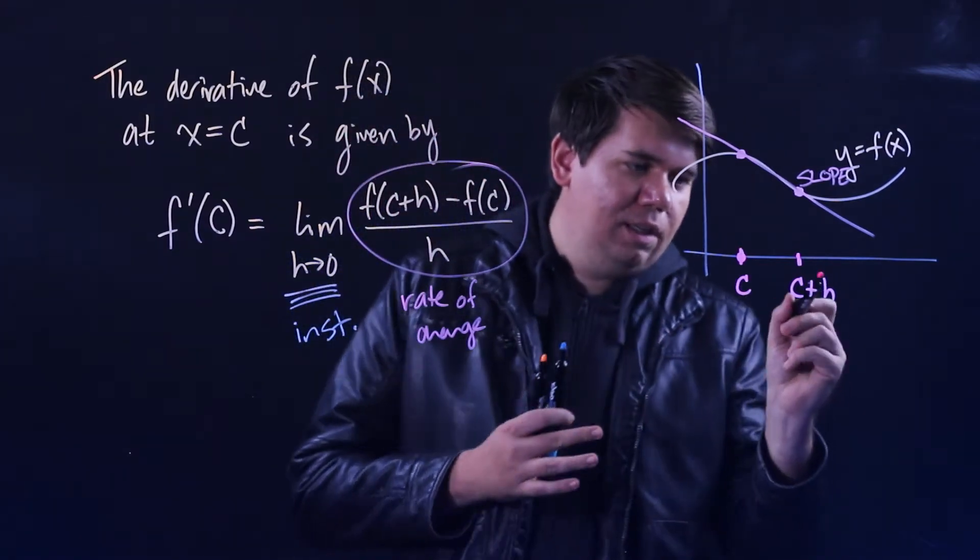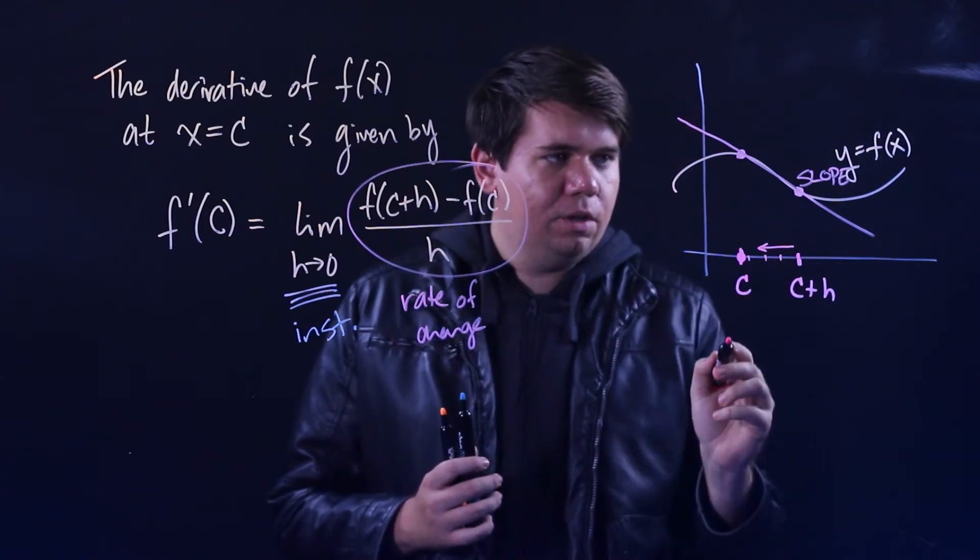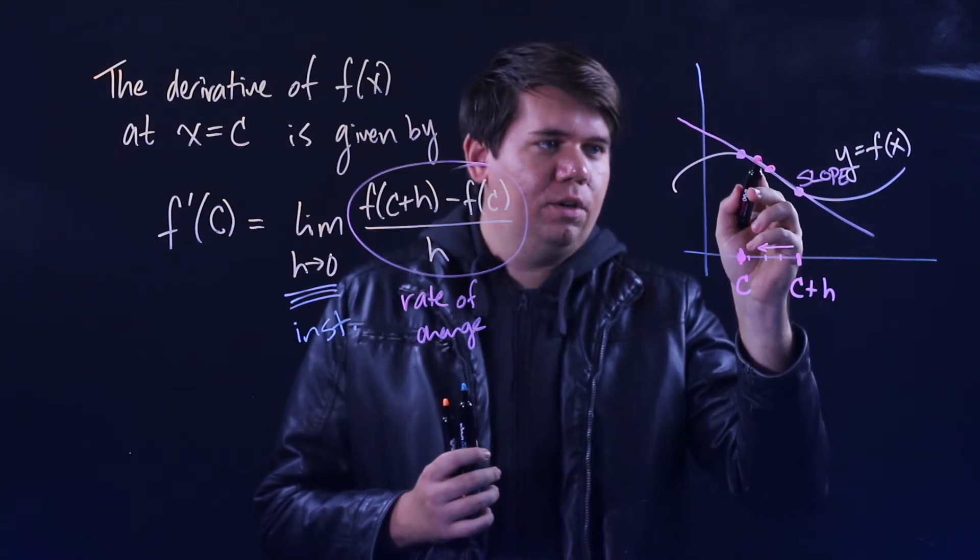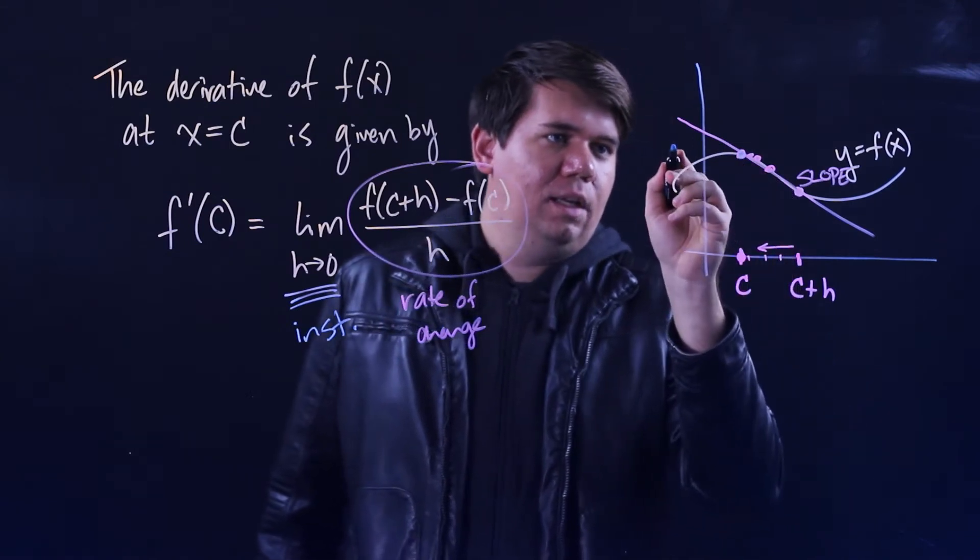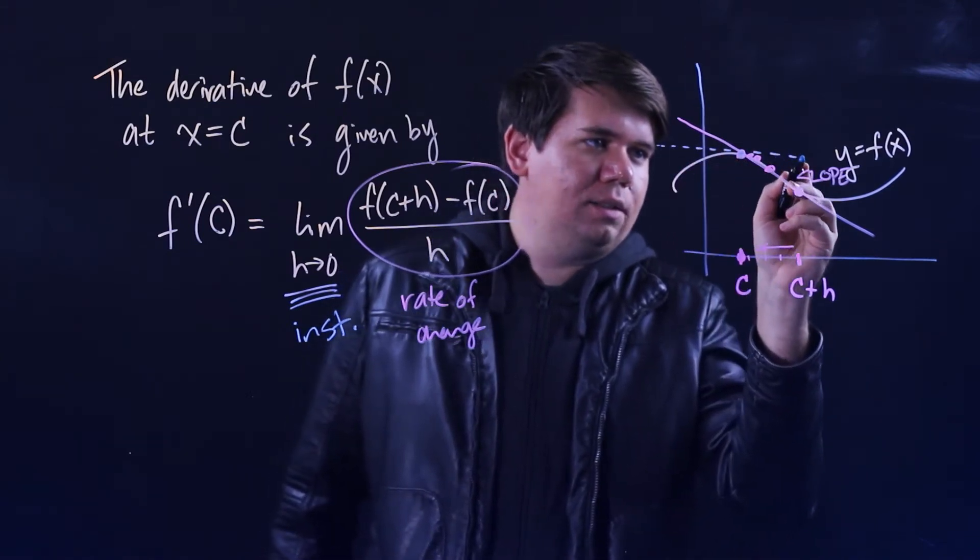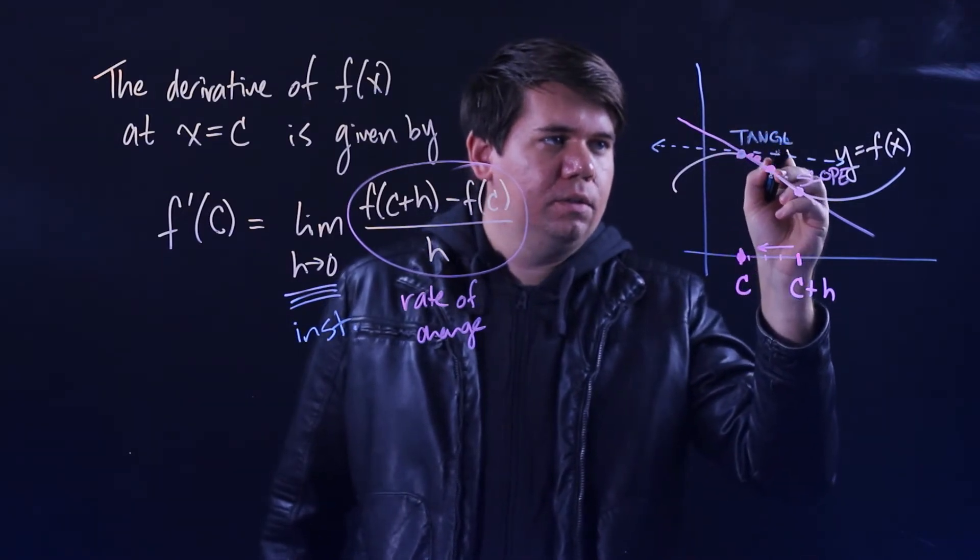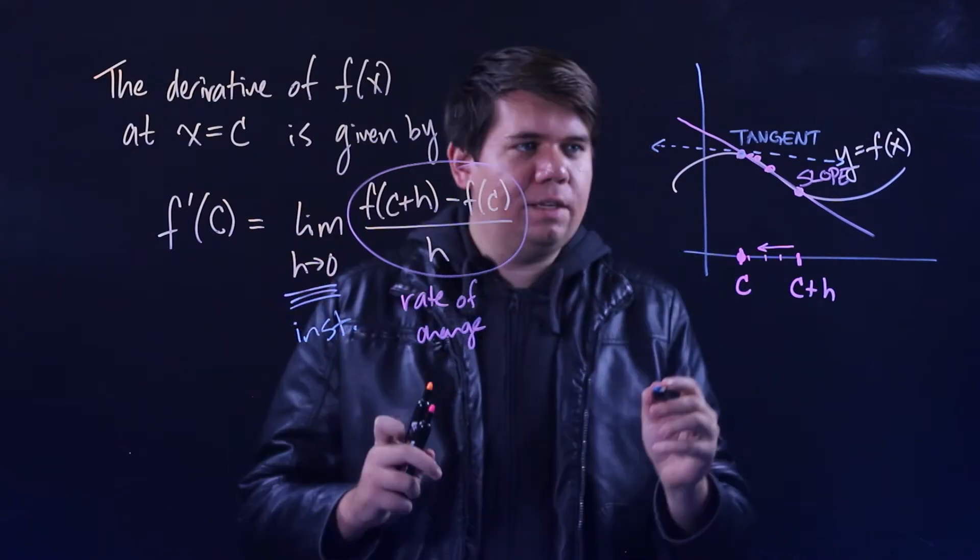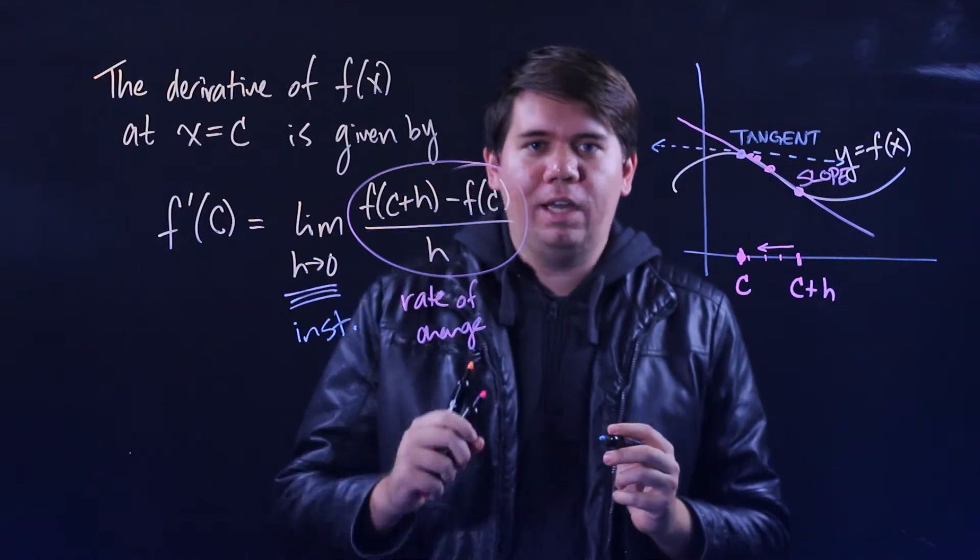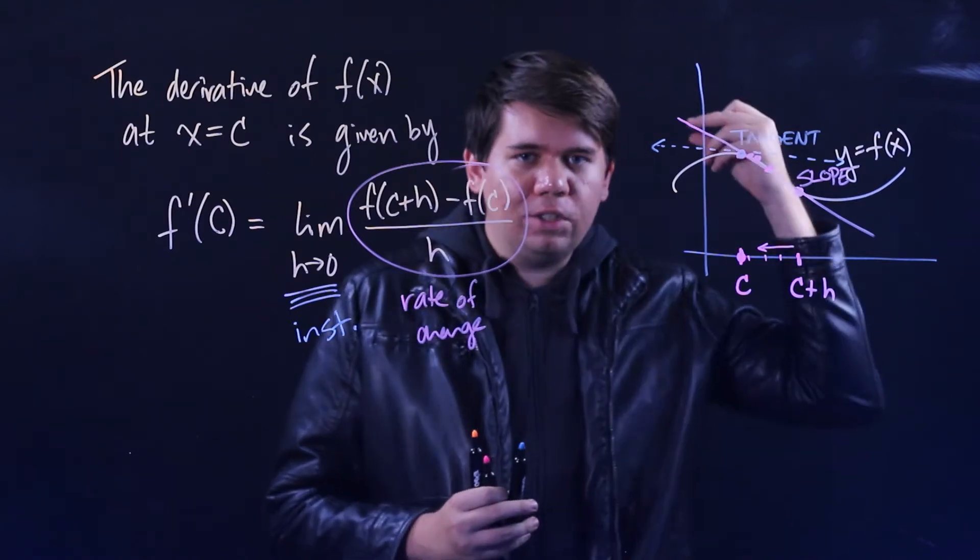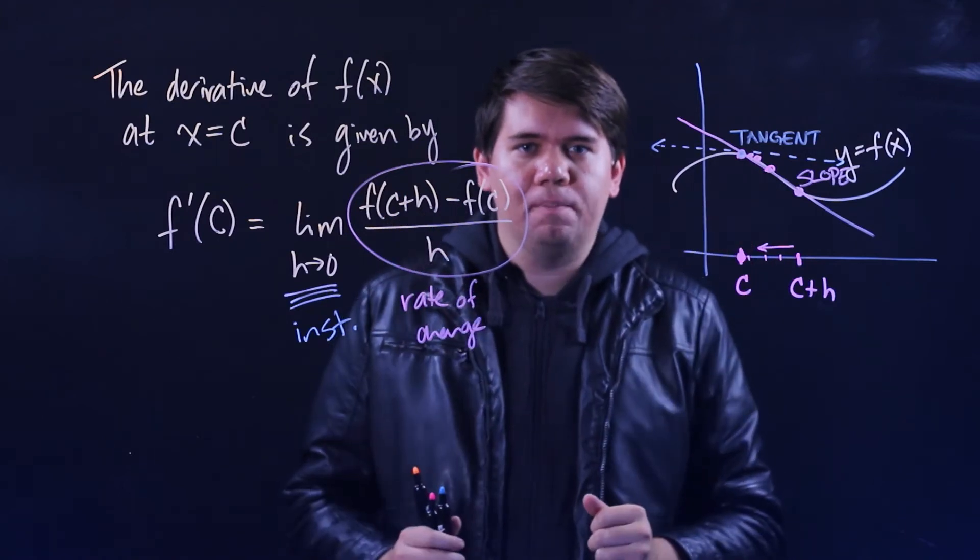But then when we have this limit here, what the limit does is it makes it an instantaneous rate of change. Because you move this h smaller and smaller, the h is going to 0, so the c plus h is moving closer and closer and closer. The second point is moving closer and closer until you just have a single point and the line that passes through that single point, which is our tangent line. So the limit is giving you the slope of this tangent line which represents the instantaneous rate of change.